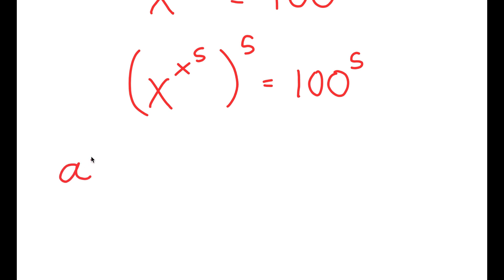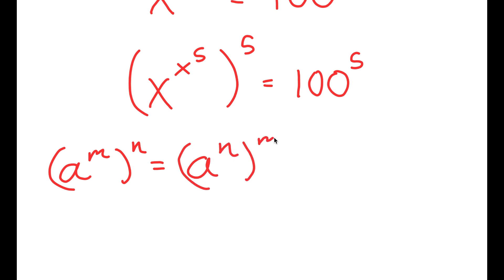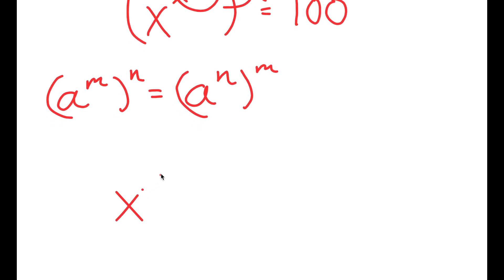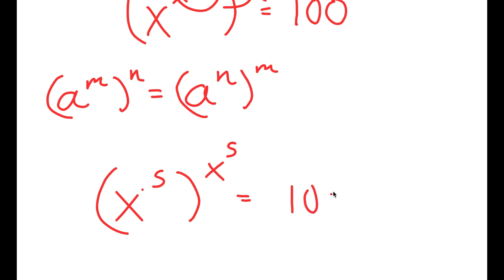Now I can use the property a to the power of m to the power of n is equal to a to the power of n to the power of m on x to the power of x to the power of 5 to the power of 5. We can think of x to the power of 5 as m and 5 as n, so I can switch the places of these two. So now I get x to the power of 5 to the power of x to the power of 5 is equal to 100 to the power of 5.